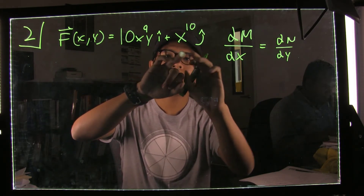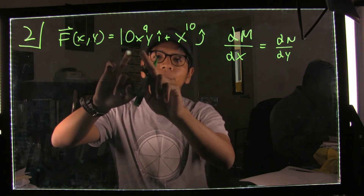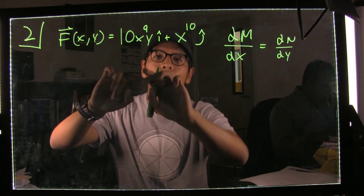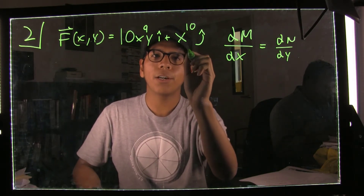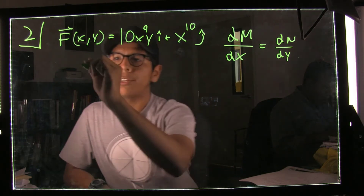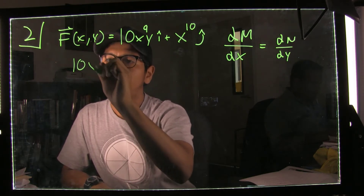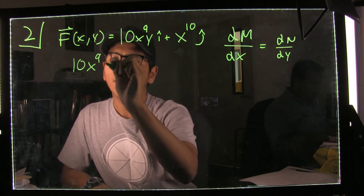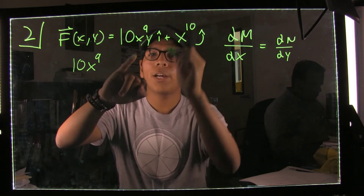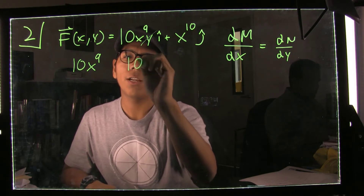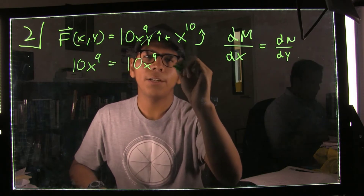We take the partial of the j-component with respect to x, and then the partial of the i-component with respect to y. The partial of M with respect to x: the 10 comes down, giving us 10 times x to the 9th. And the partial with respect to y, we just remove the y, giving us 10x to the 9th. As you can see, they're equal to each other, so it is indeed conservative.